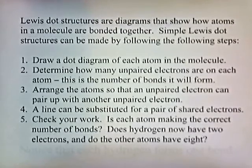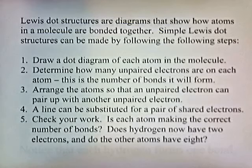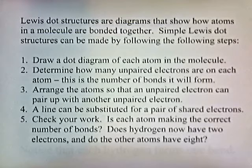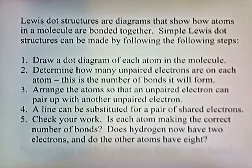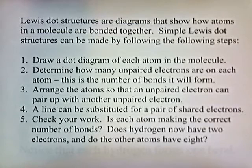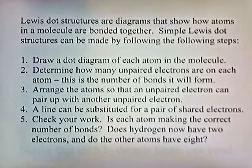Lewis dot structures are diagrams that show how atoms in a molecule are bonded together. Simple Lewis dot structures can be made by following these steps: draw a dot diagram of each atom in the molecule, determine how many unpaired electrons are in each atom — this is the number of bonds it will form — arrange the atoms so unpaired electrons can pair up, and substitute a line for a pair of shared electrons. Check your work: does hydrogen have two electrons, and do the other atoms have eight?